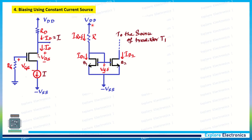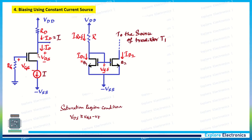In place of the current source symbol, the current mirror circuit acts as a constant current source. The reference current I_ref flows through resistor R and then through transistor Q1. The gate of Q1 is connected to its own drain, making VGS equal to VDS for Q1, so Q1 is always in saturation. Since MOSFET gate current is always zero, no current is lost to the gates.